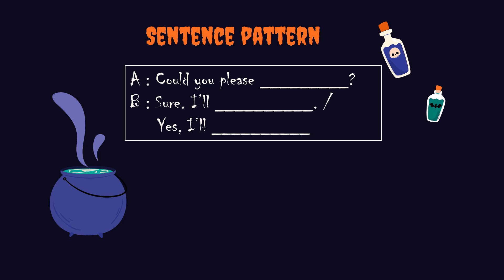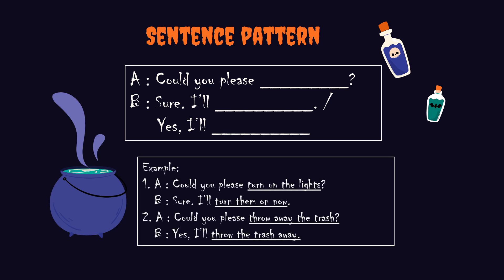This is the sentence pattern or pola kalimat yang akan kita gunakan. Could you please [verb phrase]? — itu cara kamu meminta tolong dengan sopan menggunakan 'could you please.' Jawabannya: Sure, I'll... atau Yes, I'll... Contohnya: Could you please turn on the lights? Sure, I'll turn them on now. Yang kedua: Could you please throw away the trash? Yes, I'll throw it away.